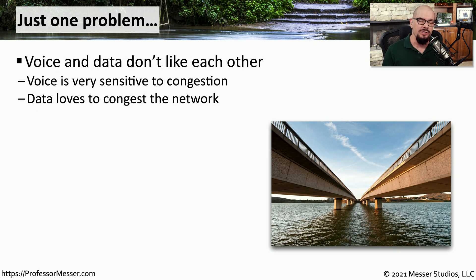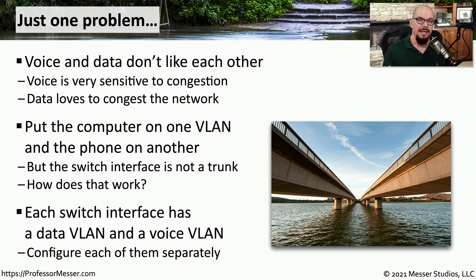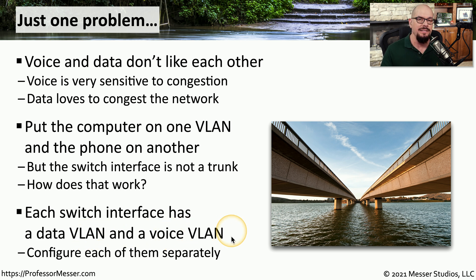If you've used a voice over IP phone and a computer at the same time, you may notice this is not an optimal configuration. Computers can send a lot of data down network connections, and it's easy to overwhelm the time-sensitive communication used for voice over IP. One way to resolve this is to have the computer operate on one VLAN and the phone communicate on a completely separate VLAN. Since we have a single network link from the desk to the switch, we use 802.1Q trunking — a specialized configuration that designates each switch interface as having both a data VLAN and a voice VLAN, allowing additional priority for voice so data traffic never disrupts phone calls.